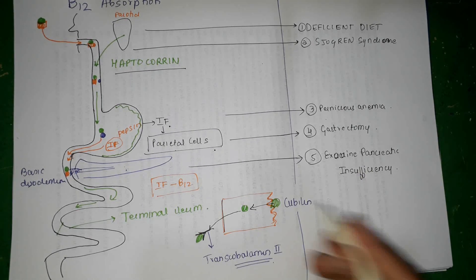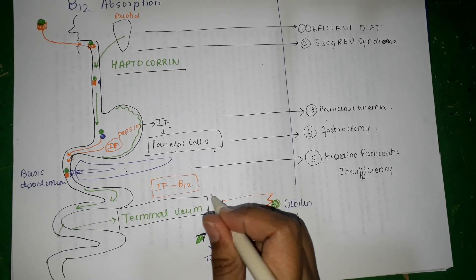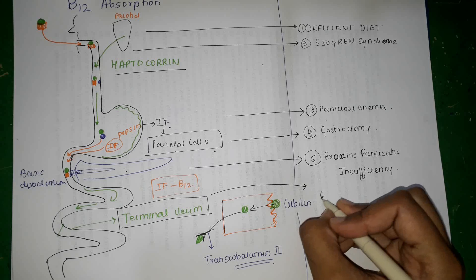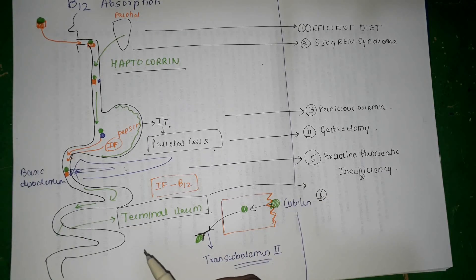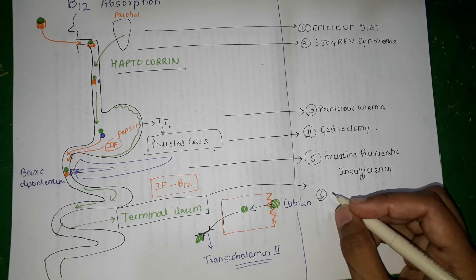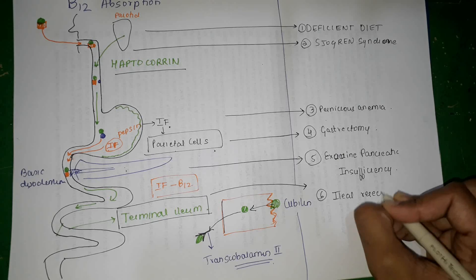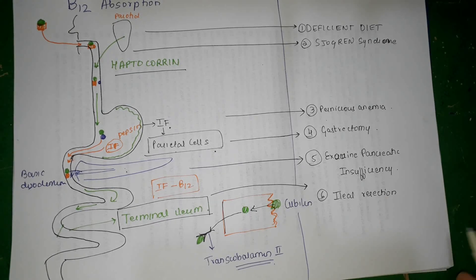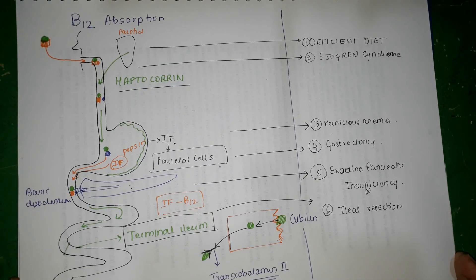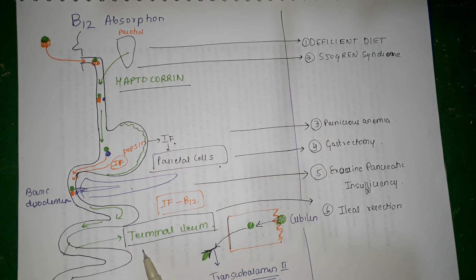The last cause occurs at the terminal ileum. There is only one thing that can happen: if there is no terminal ileum, there is no place for all of this to be absorbed. This occurs if a person has undergone ileal resection. So this was mainly about vitamin B12 absorption and how deficiencies at each step can cause vitamin B12 deficiency. Hope this video was useful — thank you for watching.